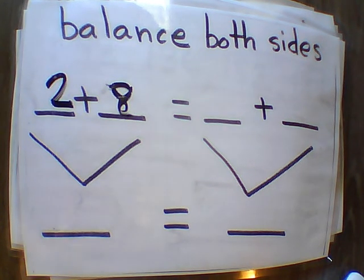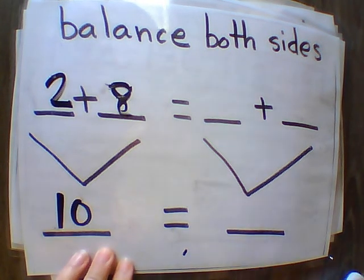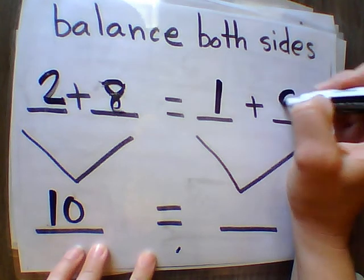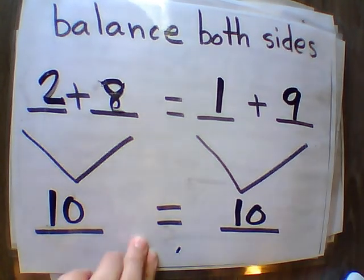All right. So 2 plus 8 is a 10 fact. And then we're going to do another equation on the other side. I'm going to do 1 plus 9 and that equals 10.